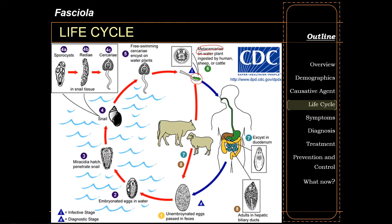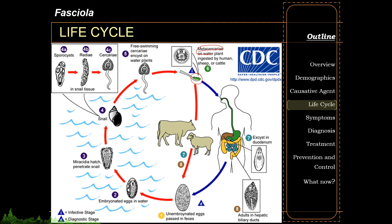The larva penetrates the intestinal wall, travels through the peritoneum, and reaches the liver parenchyma. Inside the liver, it looks for a proper home inside the biliary ducts, where maturation usually occurs and takes around three to four months from ingestion. The lifespan of a mature Fasciola is around nine to thirteen years. Once mature, Fasciola will release unembryonated eggs into the biliary duct.